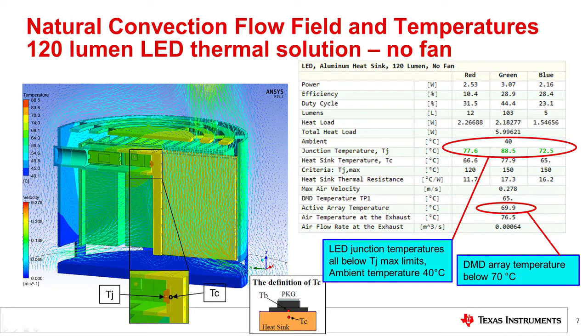Here we present the results for natural convection flow and we show the flow field and temperature field. The solution is for 120 lumen LED-based projector. On the left side, one can identify that the maximum temperature value is 88.5 degrees Celsius for green LED and maximum air velocity is 0.28 meters per second. It is a slow airflow and as you can see, the velocity vectors show that air enters at the bottom of the cavity, by buoyancy is driven upwards and exits through the slots at the top as it was expected.